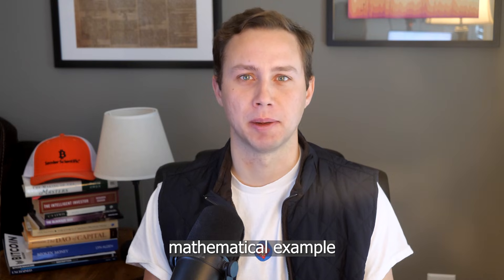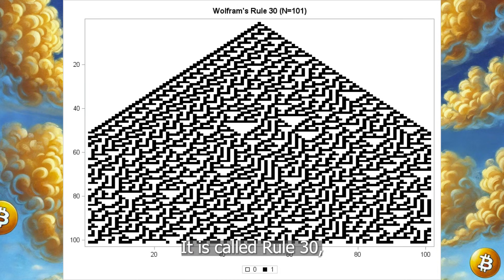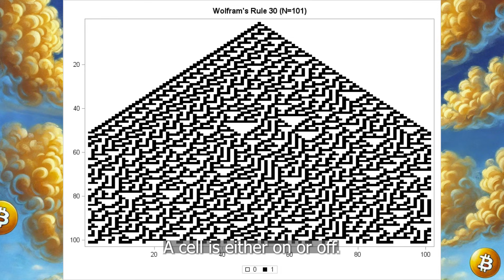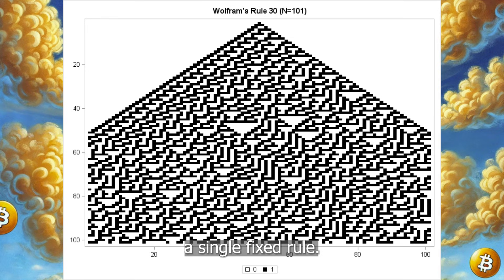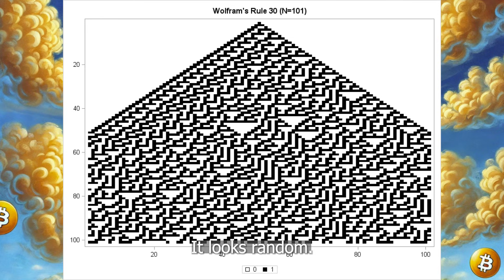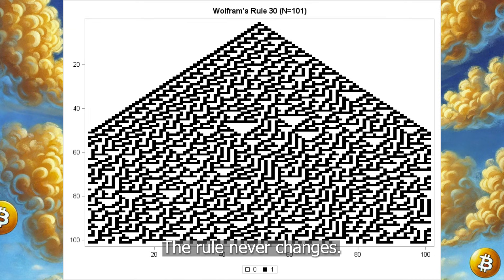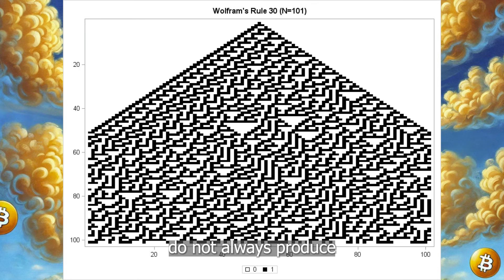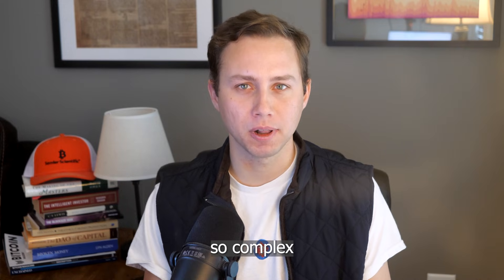There is a well-known mathematical example that shows this same phenomenon even more starkly. It is called Rule 30, discovered and studied by Stephen Wolfram. Rule 30 is a one-dimensional system with only two states — a cell is either on or off, black or white. Each new row is generated by looking only at three cells above it and applying a single fixed rule. There is no randomness, no external input, no complexity added. Yet when you run Rule 30 forward in time, the pattern becomes chaotic — it looks random, and becomes almost impossible to predict locally, even though the system is fully deterministic. The rule never changes. The inputs stay minimal. Complexity emerges purely from repetition. This overturned a long-held intuition: simple rules do not always produce simple outcomes. In many cases, they produce outcomes so complex they appear irreducible.